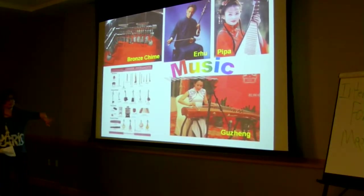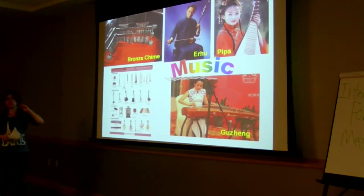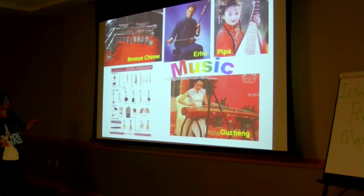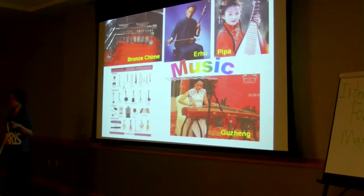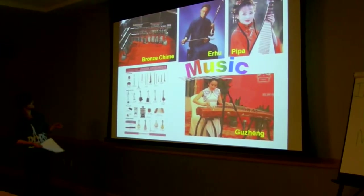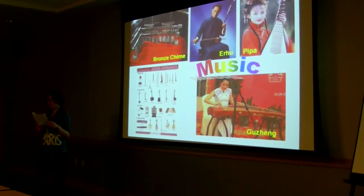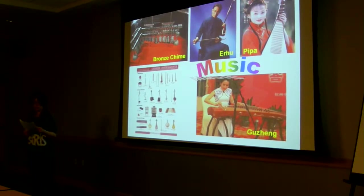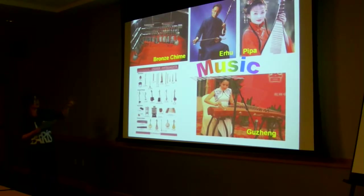Chinese music has been made since the dawn of Chinese civilization, as early as the Zhou dynasty, around 1122 BC. The oldest bamboo flutes and the Qin are all from China. Instruments are traditionally divided into eight categories based on their material, such as animal skin, wood, stone, metal, and other things.